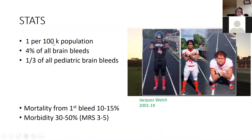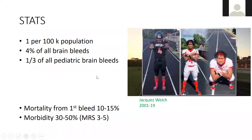An AVM happens in about 1 per 100,000 population — very different from aneurysms, which can happen in 1 in 50 people. AVMs account for about 4 percent of all brain bleeds and about a third of all pediatric brain bleeds. When an AVM bleeds for the first time, there's a 10 to 15 percent chance you can die from that. And if you do survive that bleed, there's a 30 to 50 percent chance you will have some neurological deficit — that's still a fairly high number.